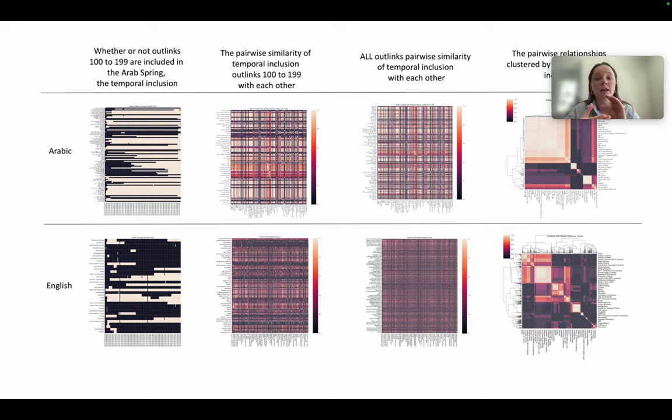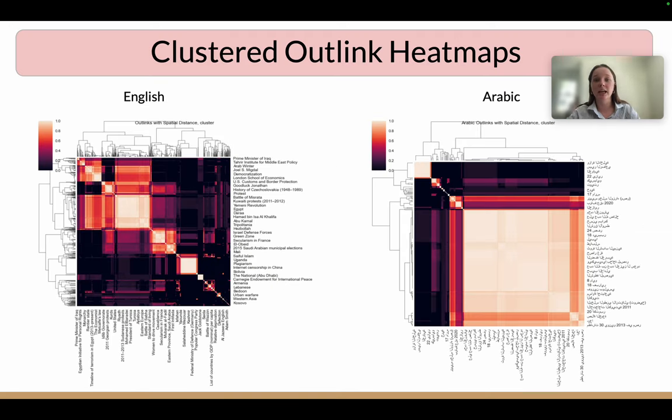So, we clustered them by outlinks that were included at similar times. This resulted in two distinct clustered outlink heat maps for each language edition of the Arab Spring.